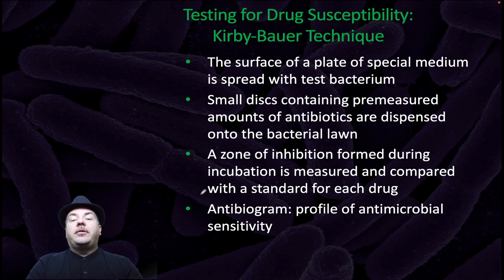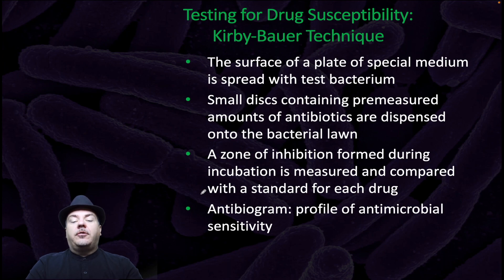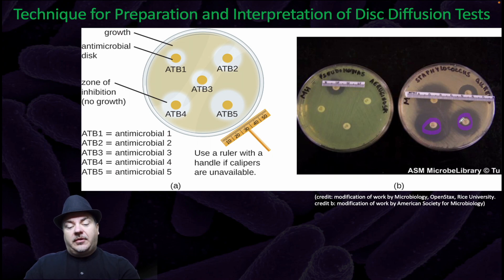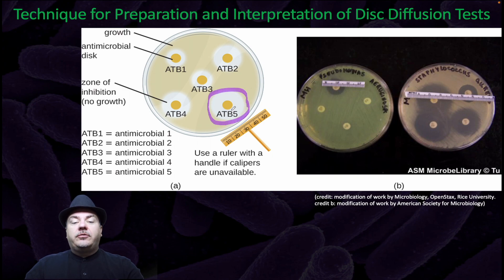In order to test for drug susceptibility, one method is the Kirby-Bauer technique. The surface of a plate of special medium is spread with test bacteria. Small discs containing pre-measured amounts of antibiotics are dispersed onto the bacterial lawn. A zone of inhibition formed during incubation is measured and compared with a standard for each drug. The antibiogram is a profile of antimicrobial sensitivity. For example, you spread a particular bacteria on a plate, place several different antimicrobial discs on it, and observe how far the bacteria cannot grow — the zone of inhibition. With one antibiotic, bacteria are unable to grow in a wide region around the disc, whereas with another antibiotic, it's a much narrower region.